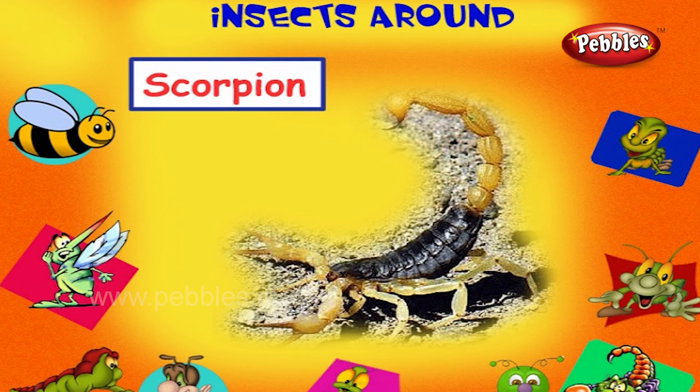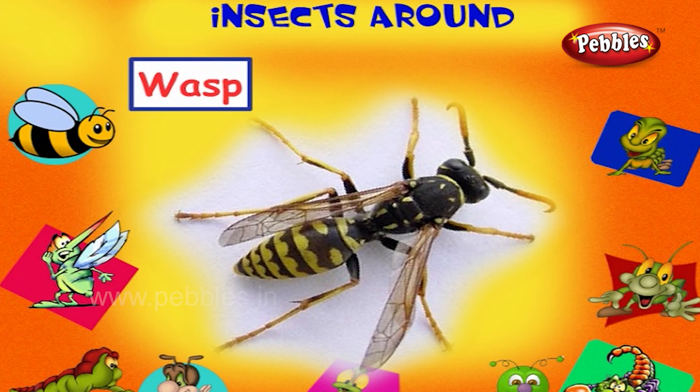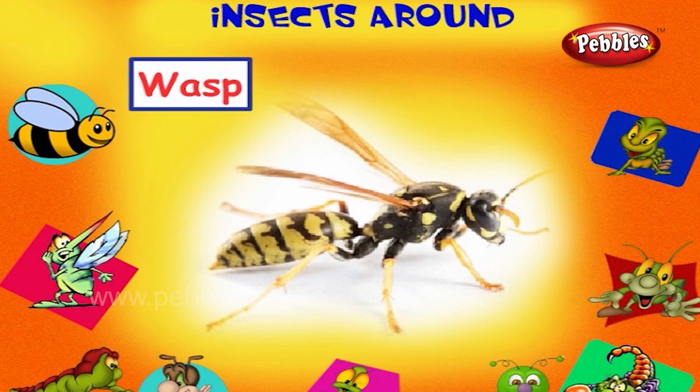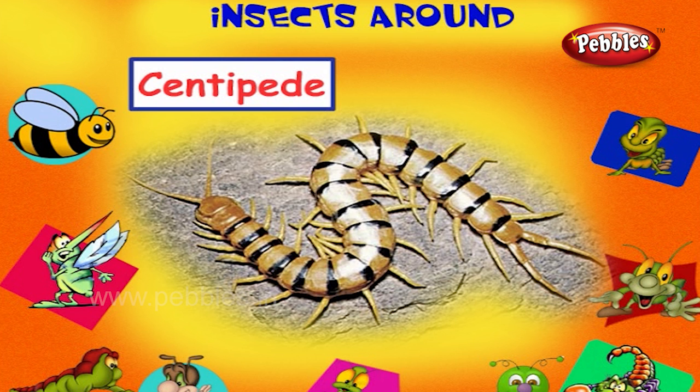This is a wasp. It is larger than a honey bee. It kills small insects to eat them. This is a centipede. It has about a hundred legs. It is poisonous. It feeds on small insects.